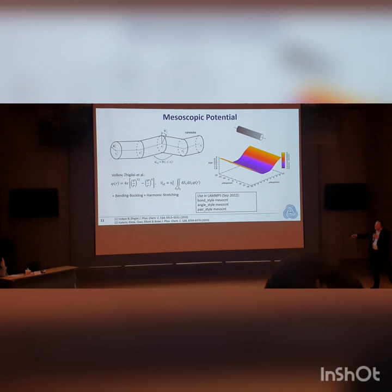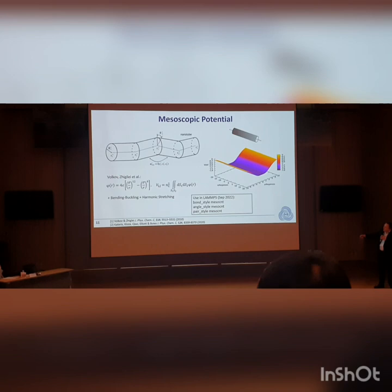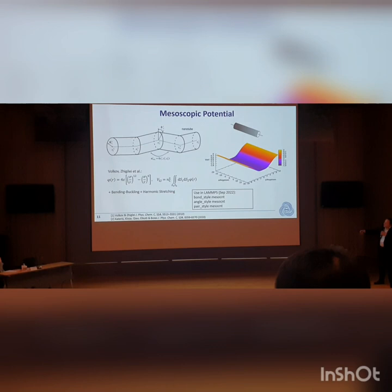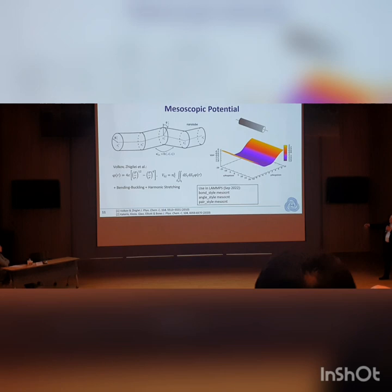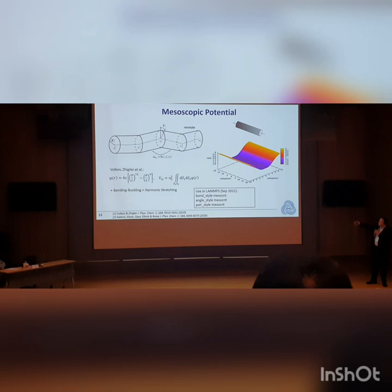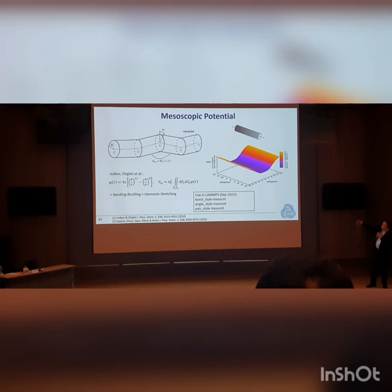This idea was first expressed by Volkov and Ziegle, published in 2010. We took that implementation, made it faster, and fixed some bugs — it was rather unstable when we first used it in LAMMPS. We now have potentials defined in LAMMPS that you can use directly, and the parameters are given in our paper. The potential describes a nice smooth interaction integrated along the tube, with no atomic rippling.